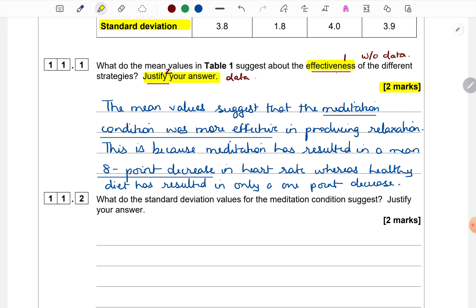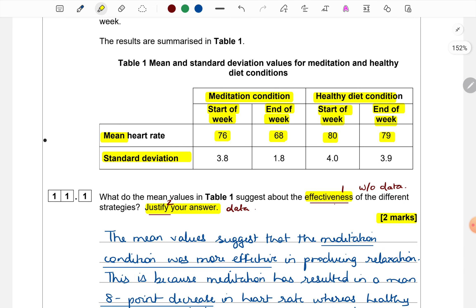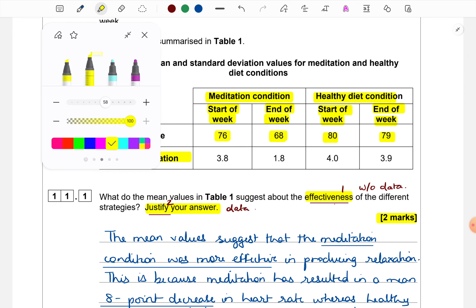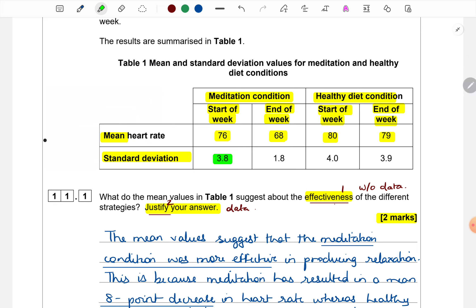Let's look at the next question. What do the standard deviation values for the meditation condition suggest, justify your answer. The structure or organization of the answer is going to be the same. I am not repeating. Only this time, our attention should be on the standard deviation column. So we can see standard deviation for meditation is 3.8 at the beginning of the week, but at the end of the week, it is 1.8. Standard deviation suggests variability or spread of scores. Typically, how different are scores from the mean value?